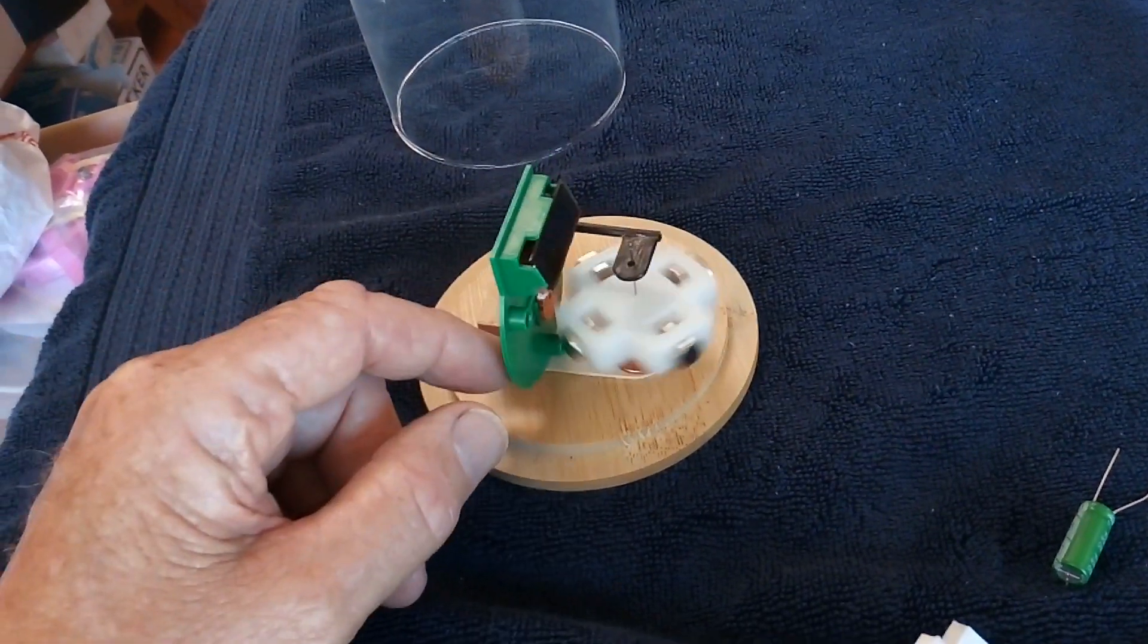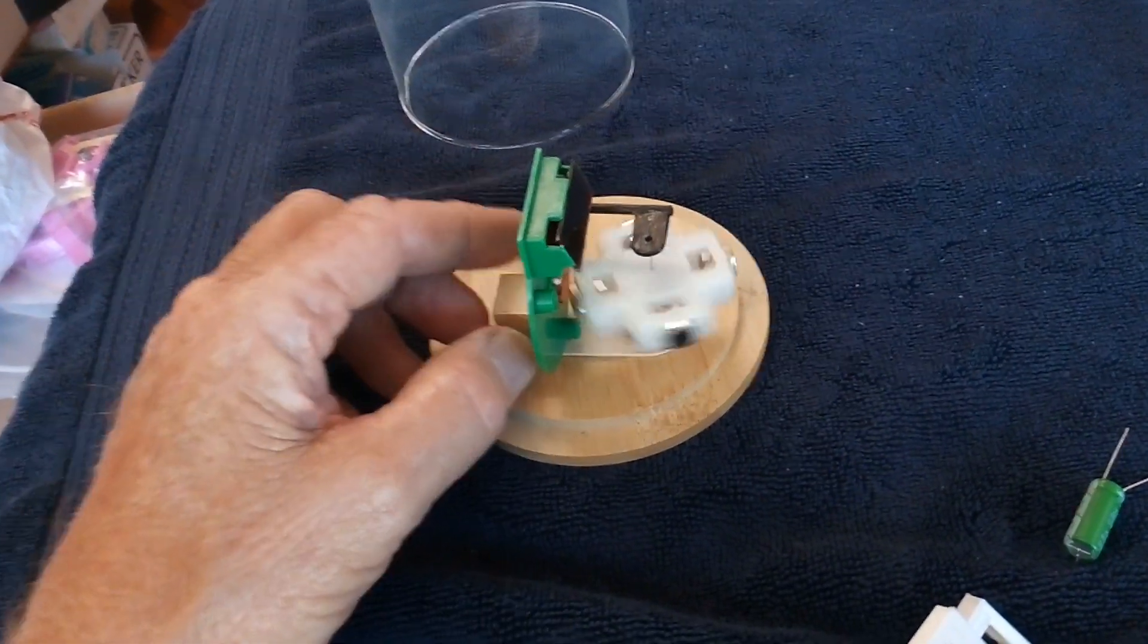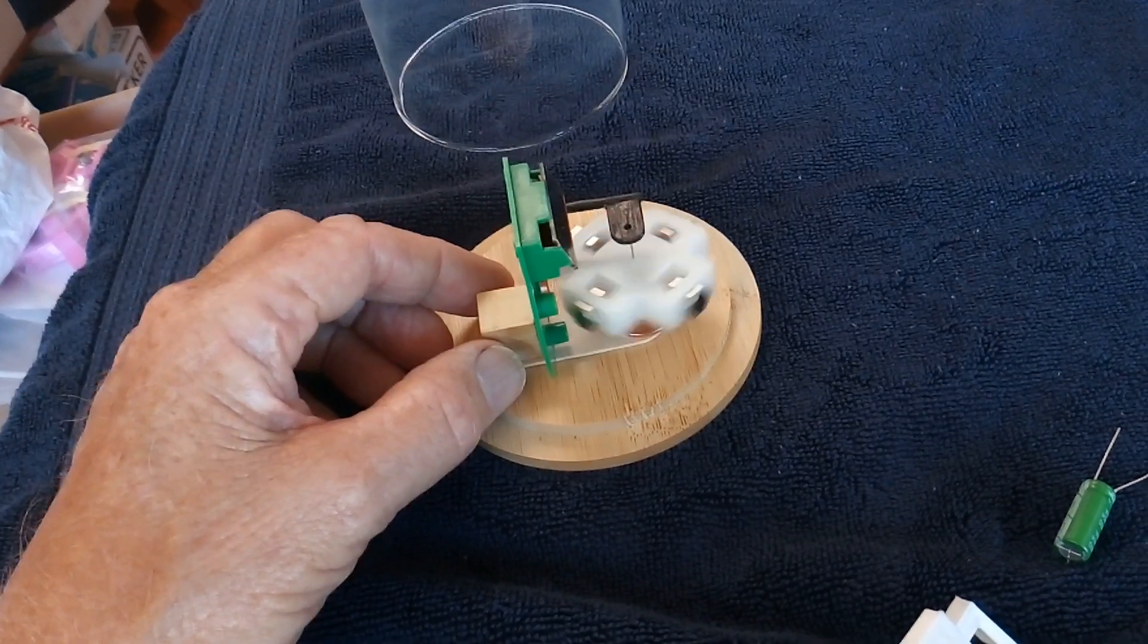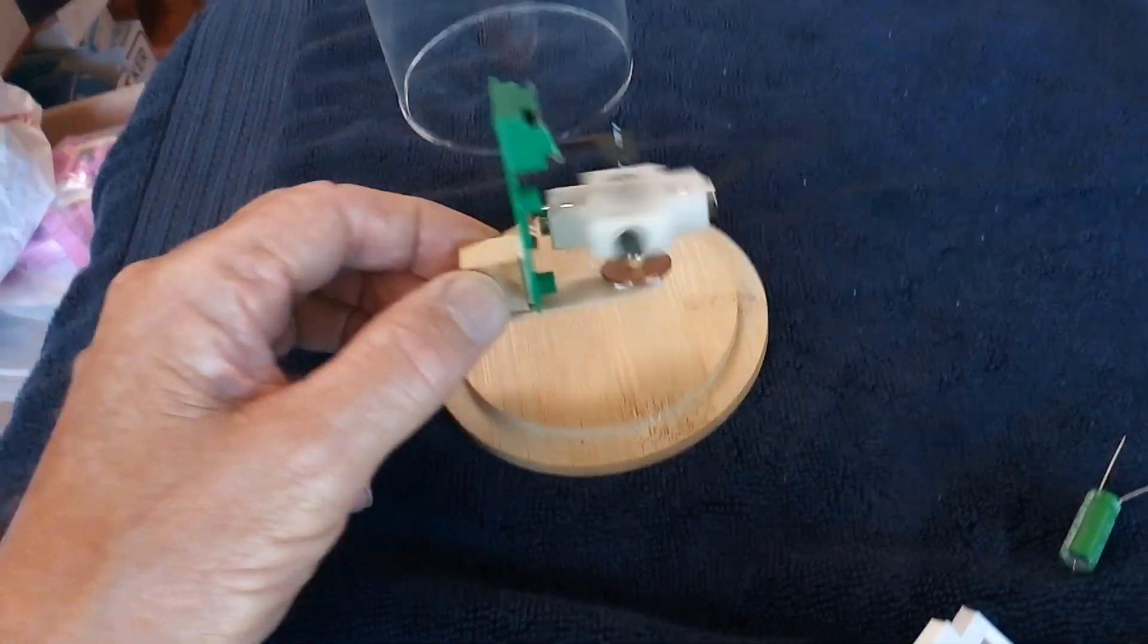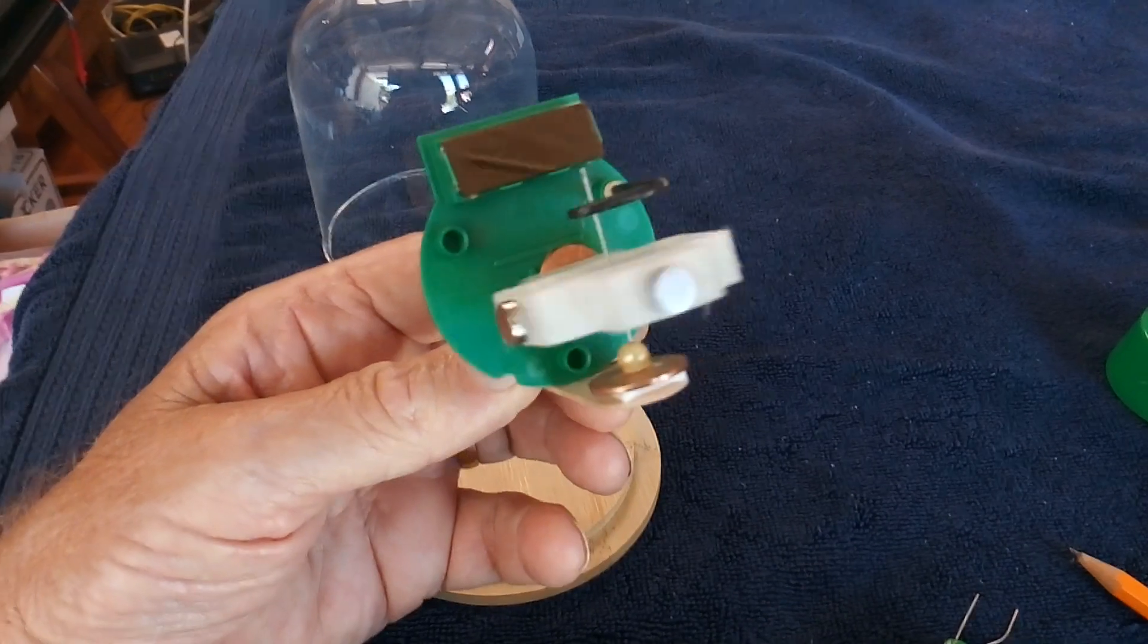Now all that is is a penny with a plastic bead super glued on it, and then popsicle sticks with another stick on it, and it sets up a bearing system that's pretty darn stable.